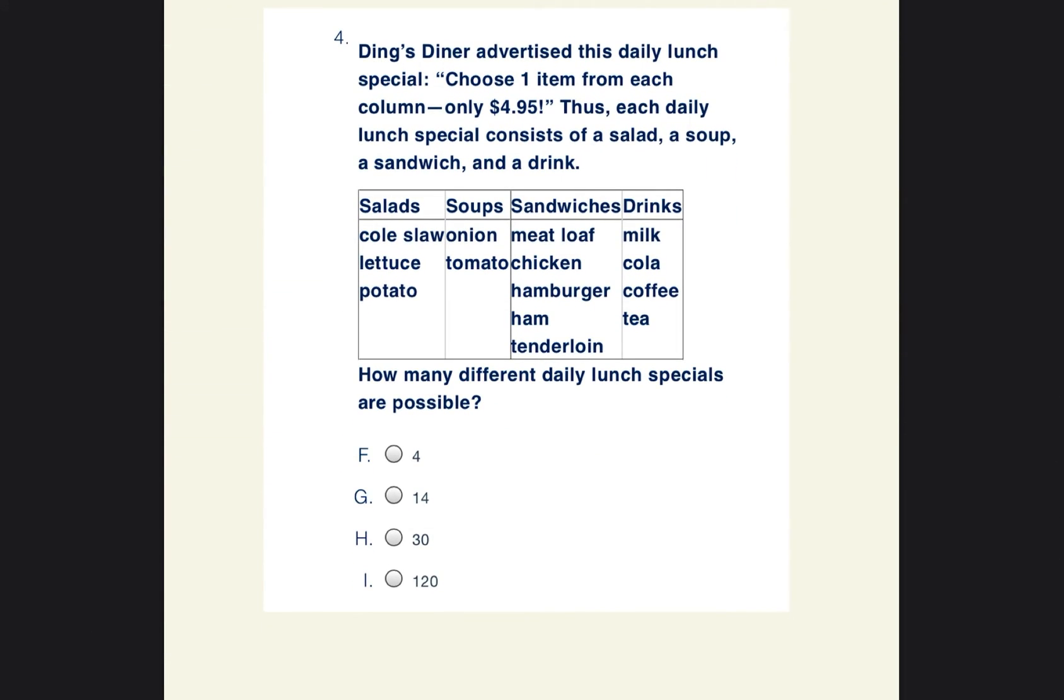All right, it says Ding's Diner advertised this daily lunch special: choose one item from each column, only $4.95. Thus, each daily lunch special consists of a salad, a soup, a sandwich, and a drink. How many different daily lunch specials are possible?